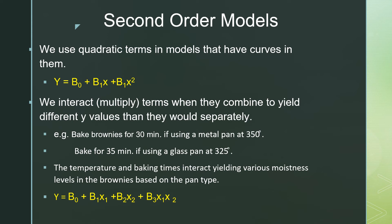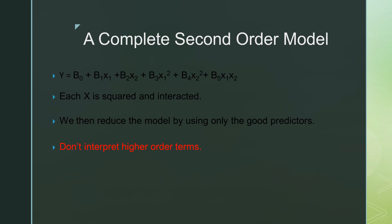Don't be intimidated by the equation when you see all the betas — there's simply a beta for each variable. A complete second-order model includes all first-order terms x1 and x2, both of those squared (x1 squared and x2 squared), and the interaction term x1 times x2. Sometimes we start with this complete model for two or three variables and reduce it down to just the good predictors. We don't interpret higher-order terms since they're not linearly related, and we also wouldn't interpret a dummy variable such as comfort level.